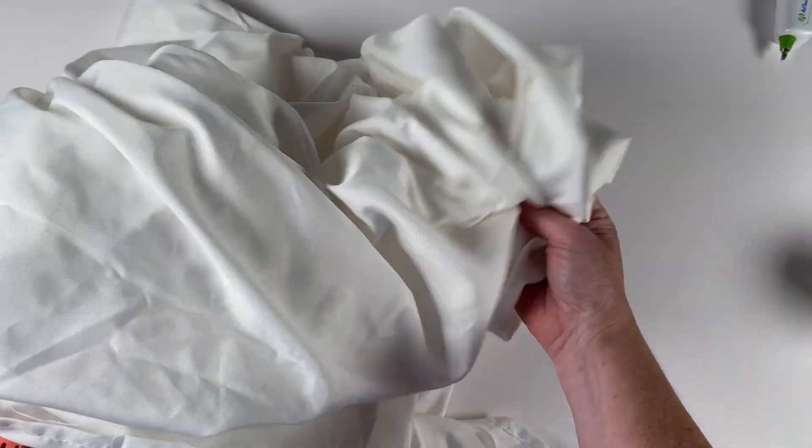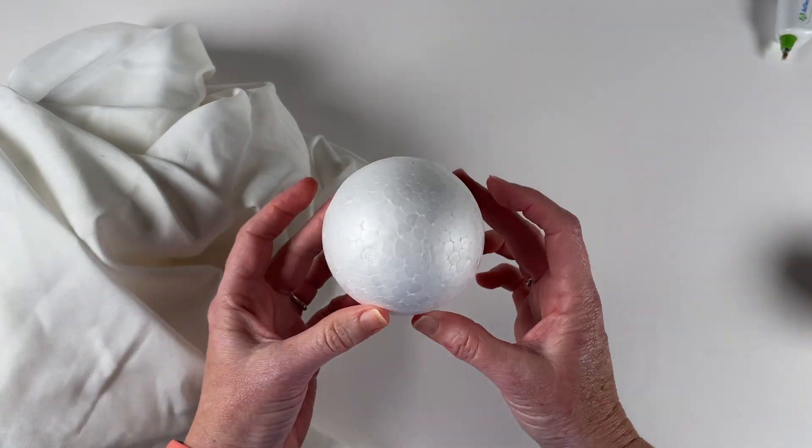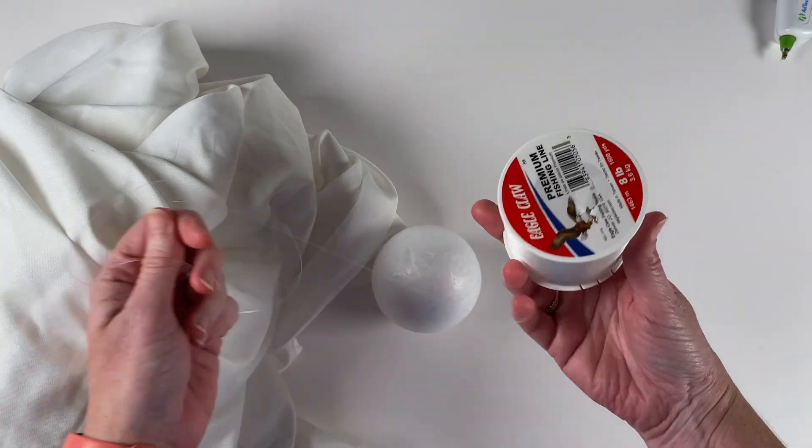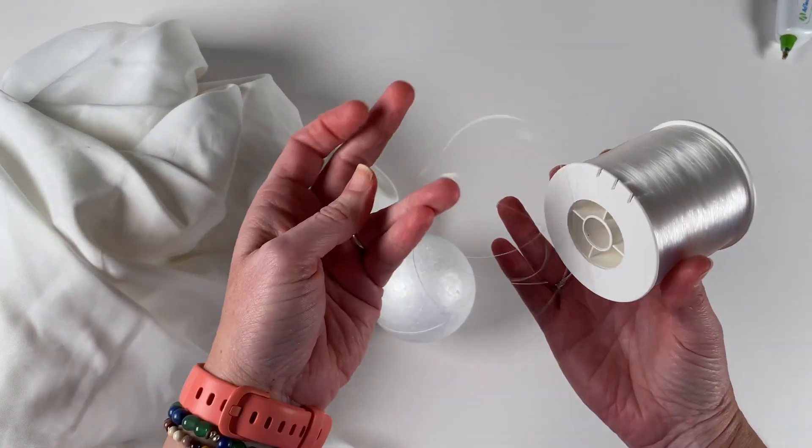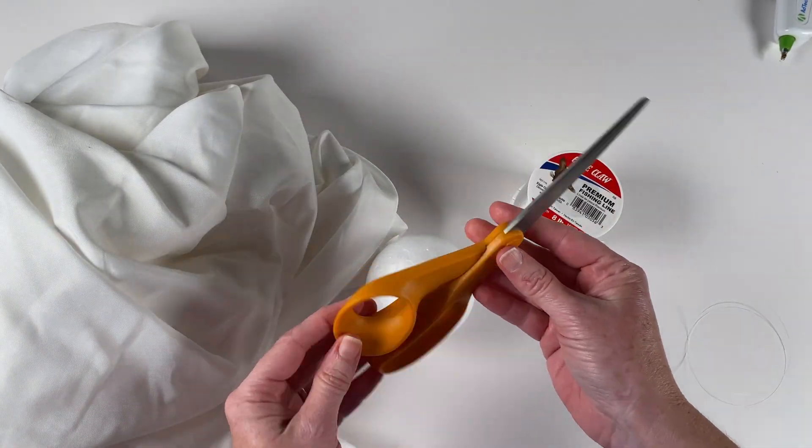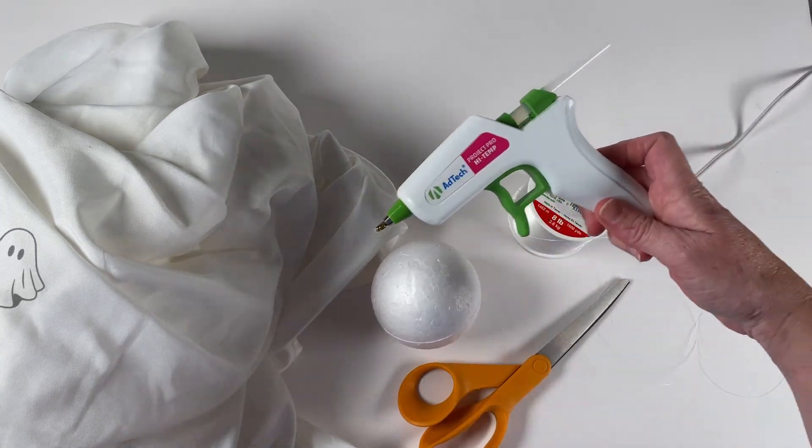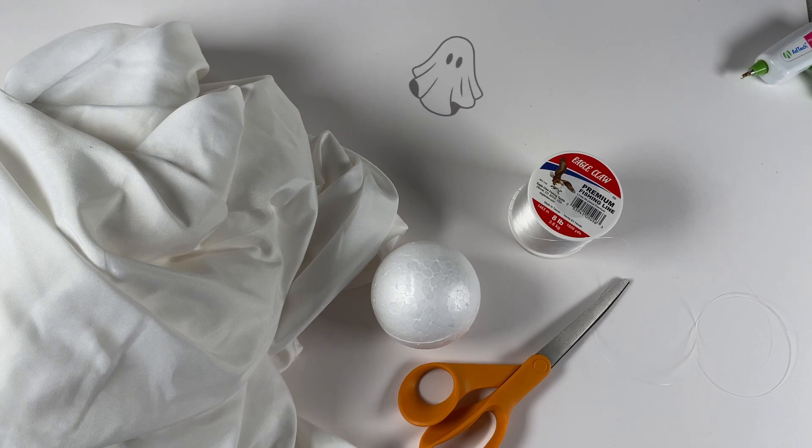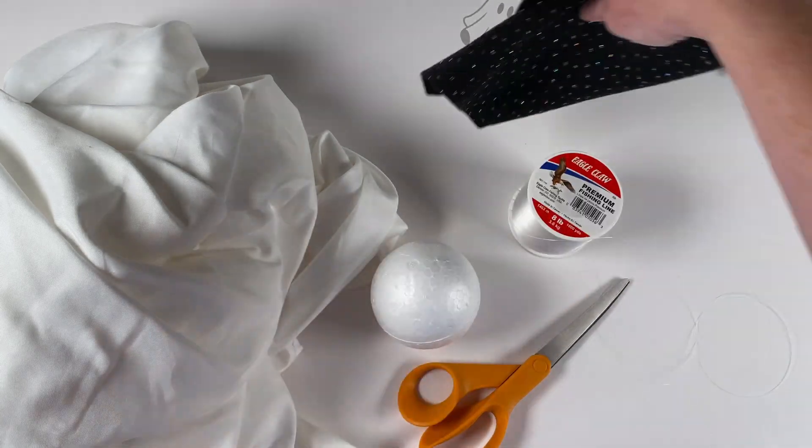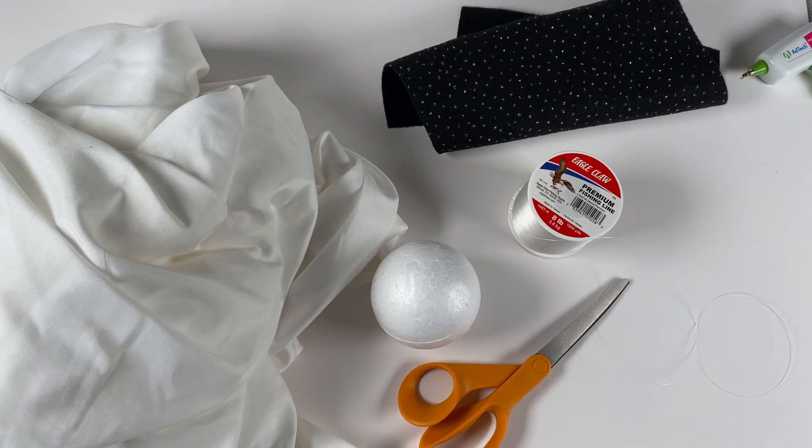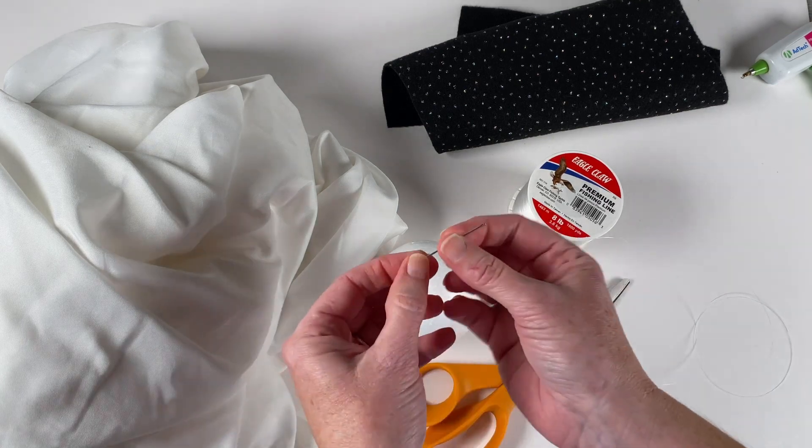Grab one of your old white sheets that you have in storage. I bought a packet of eight foam balls from my local craft store. Hopefully you have some fishing line in your garage that you can use. Grab some crafting scissors and your hot glue. I had some black felt in my craft supplies. You'll also need a needle that is big enough for the fishing line.